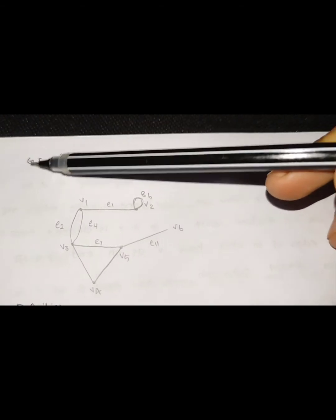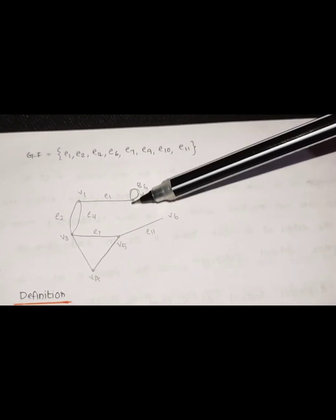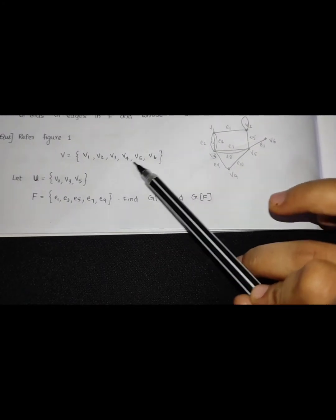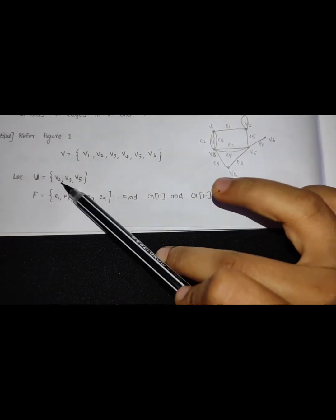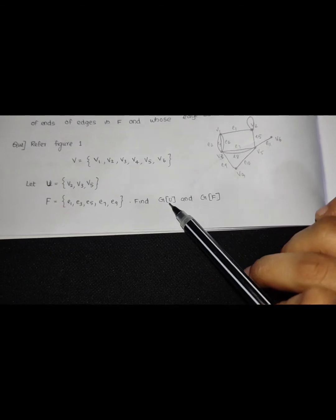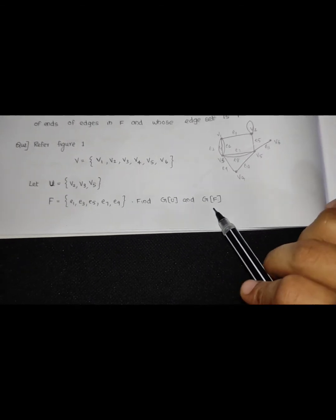For G minus F: G has edges E1 through E11, and F contains E3, E5, E8. Removing F from G gives G minus F. We also define the induced subgraphs G[U] and G[F]. G[U] is the subgraph induced by the vertex set U = {V2, V3, V5}, and G[F] is the subgraph induced by the edge set F = {E1, E3, E5, E7, E9}.